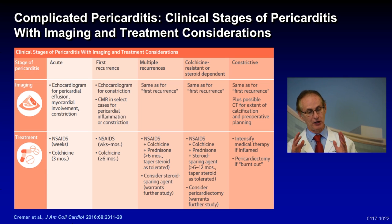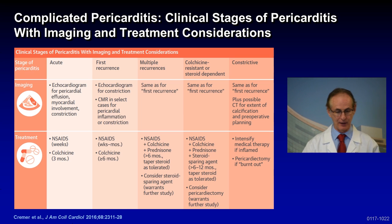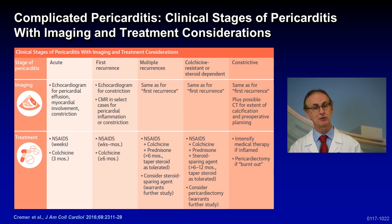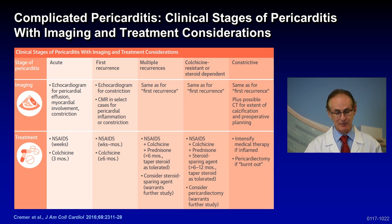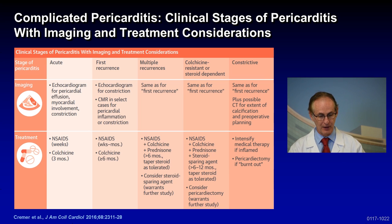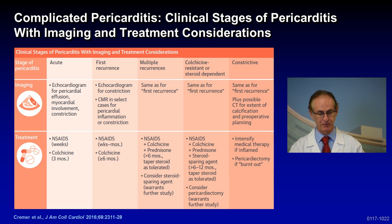Then it gets complicated — you get a first recurrence. You may do an echocardiogram to assess constriction, and now you may consider CMR — cardiac magnetic resonance imaging — in select cases for pericardial inflammation or constriction. In this case, you may give NSAIDs a little longer — weeks to months — and colchicine for more than six months.